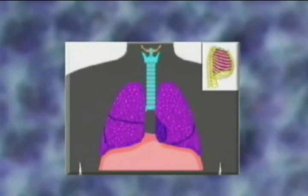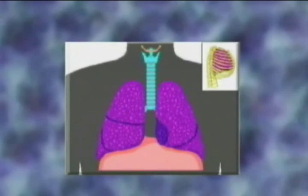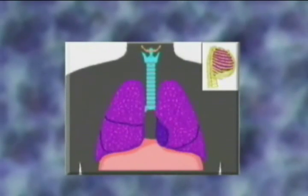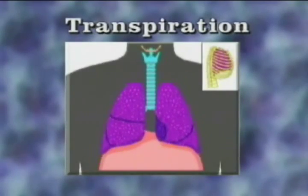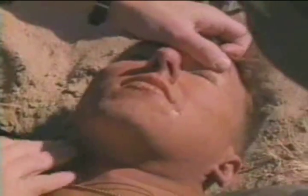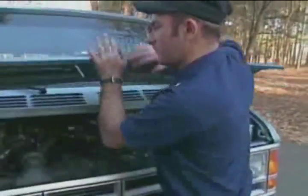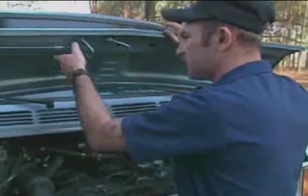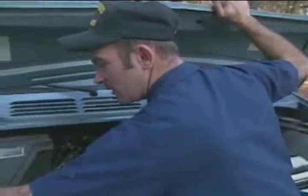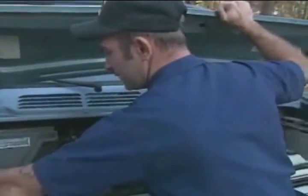Heat is also released from the lungs through exhaled water vapor. This action is termed transpiration. If the quantity of fluids in the skin is reduced to the point that perspiration stops, the cooling system will cease functioning. This is similar to the way your car engine overheats and shuts down if its cooling system runs dry.